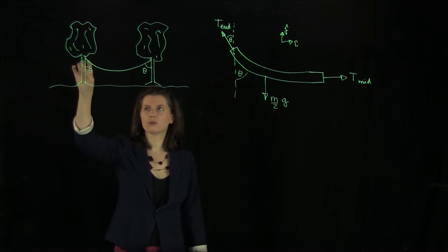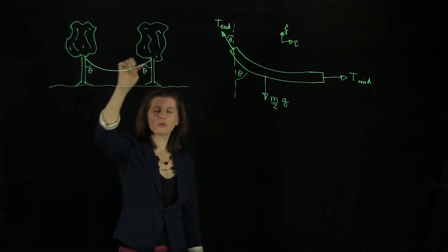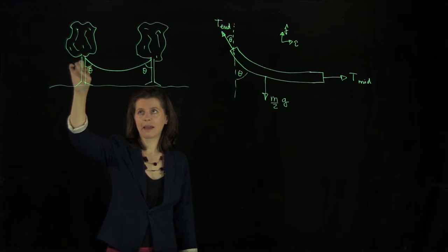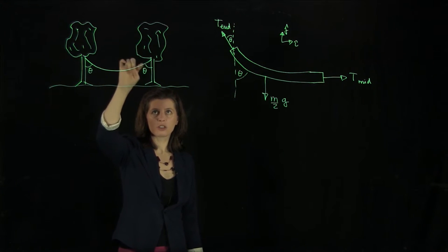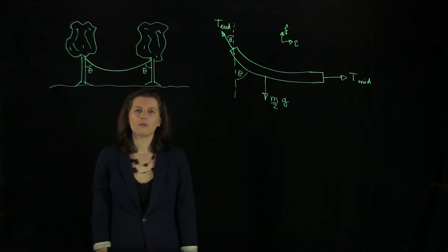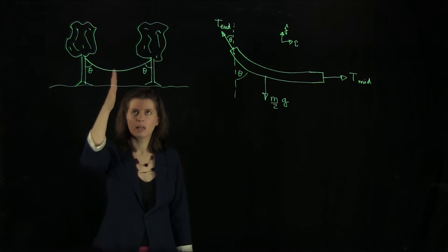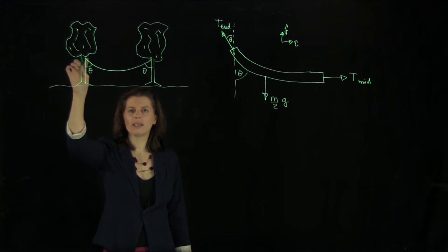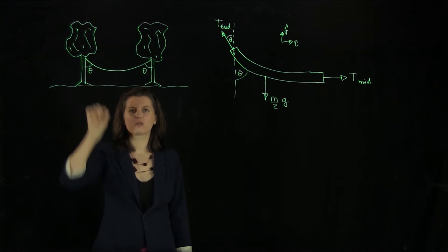So we're having one rope, or perhaps two ropes, hanging between two trees here. And the span is an angle theta on each side here. And we want to know what is the tension in this rope at the midpoint and here right where it is attached to the tree.